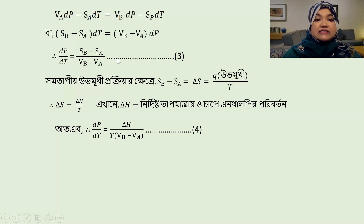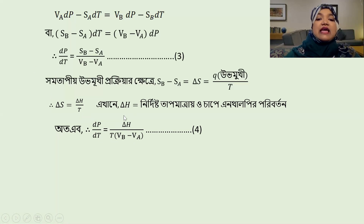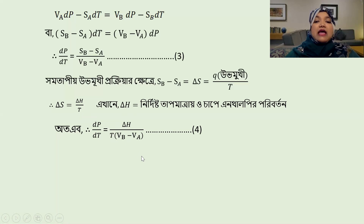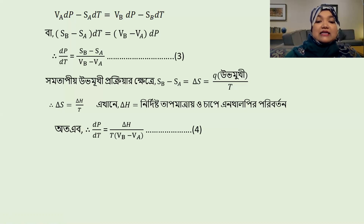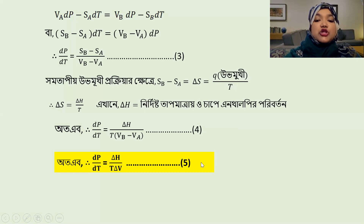dp/dt equal to (S_B minus S_A) divided by (V_B minus V_A), so that delta S divided by T. So that delta S equal to delta H by T. Therefore dp/dt equal to delta S over T, that is equation 3. dp/dt equal to delta S divided by T times delta V, that is the Clausius-Clapeyron equation, equation 5.